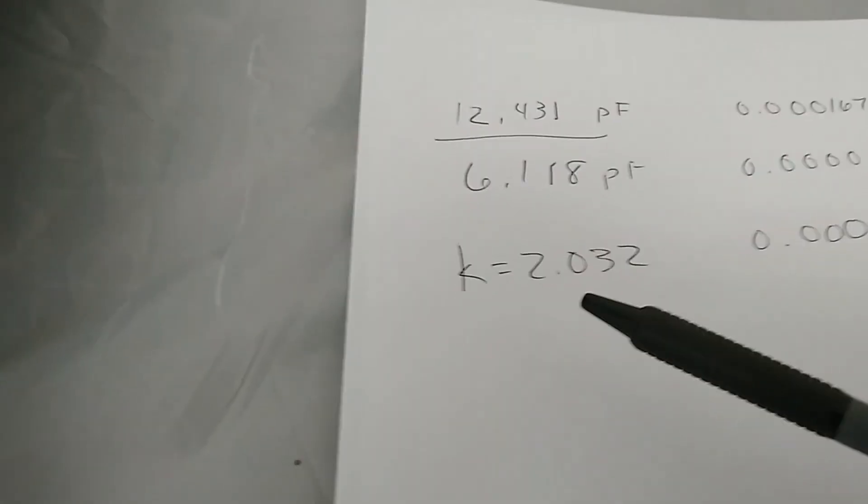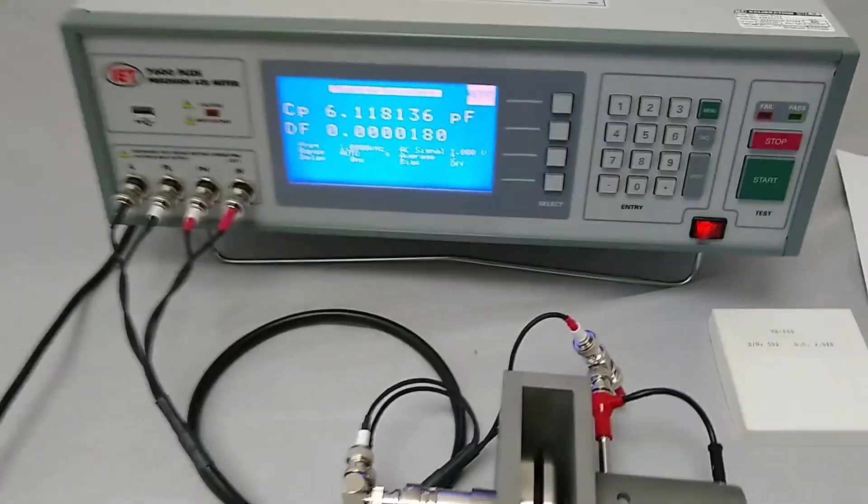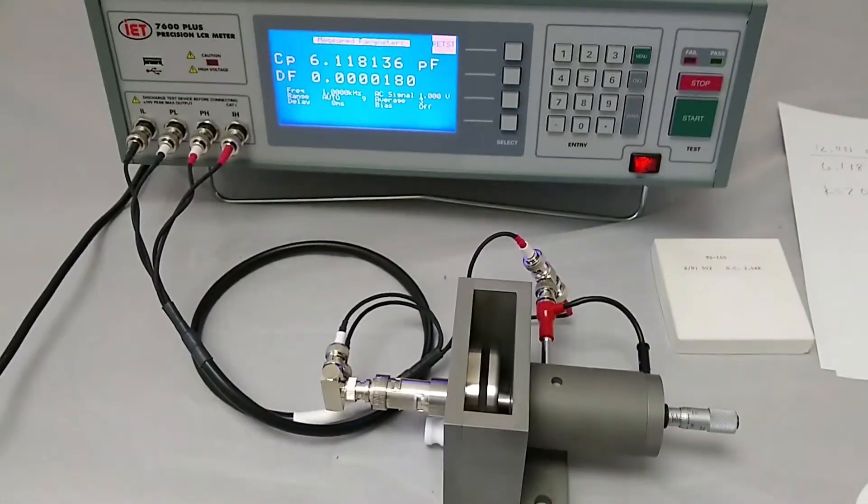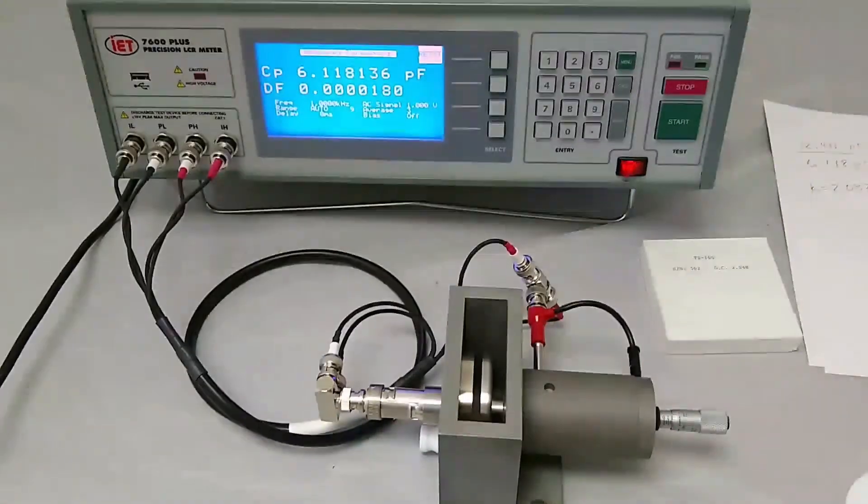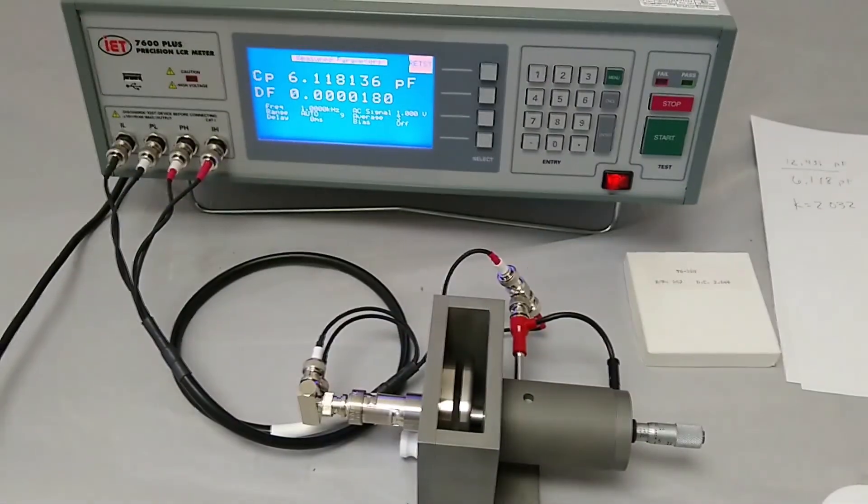Dielectric constant 2.032 compares quite well with the calibrated value of 2.048. This is really all there is to basic dielectric constant measurements with the 7600 Plus and the LD3 cell. Thank you.